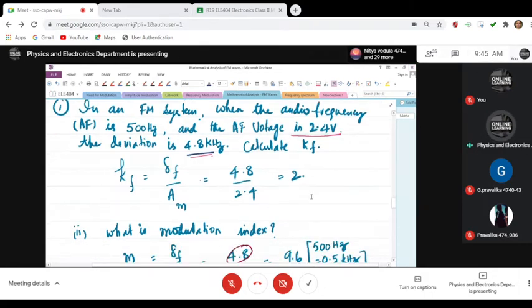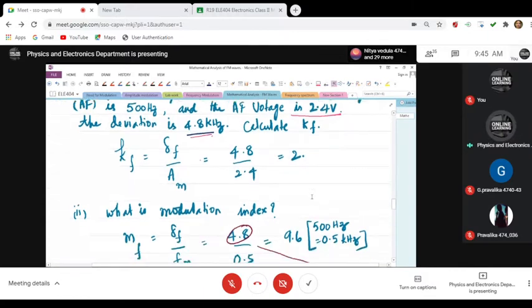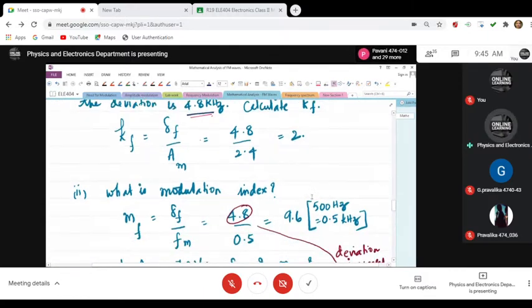Next is what is modulation index. Now we are talking about frequency modulation. Modulation index is given by delta f by fm.